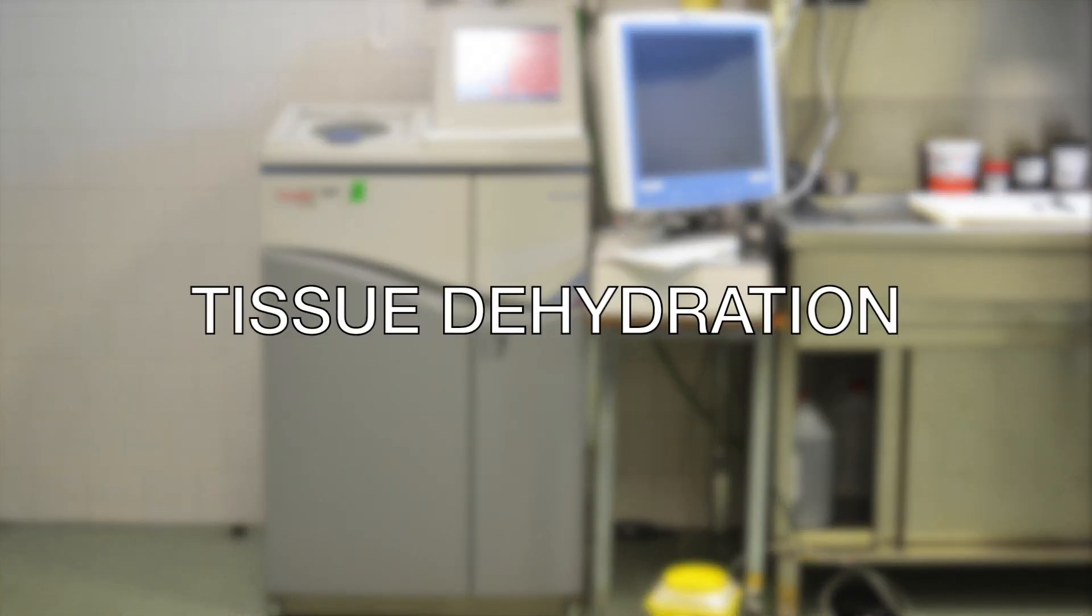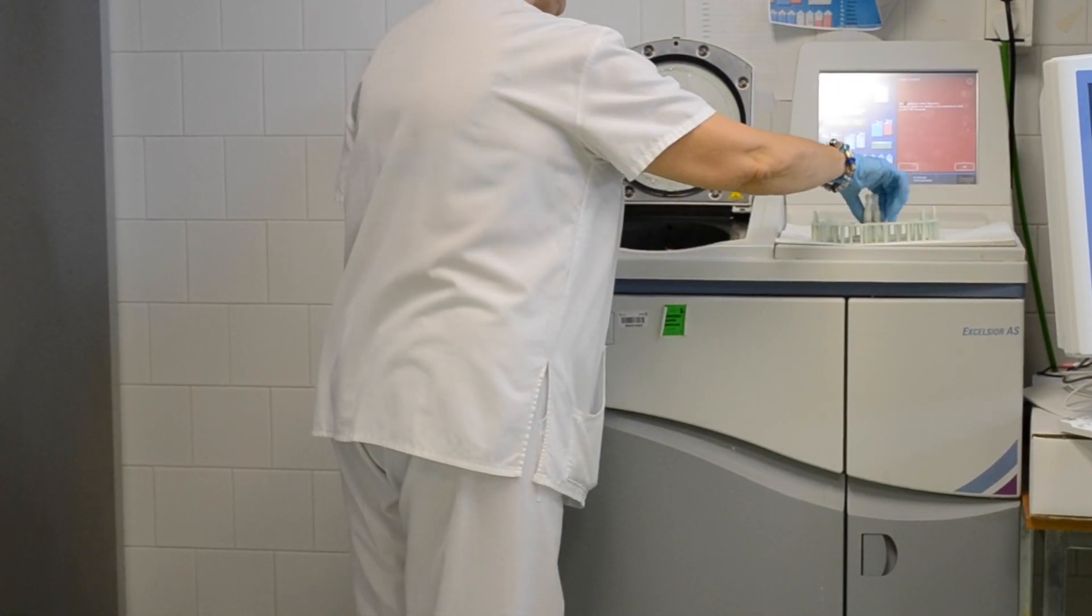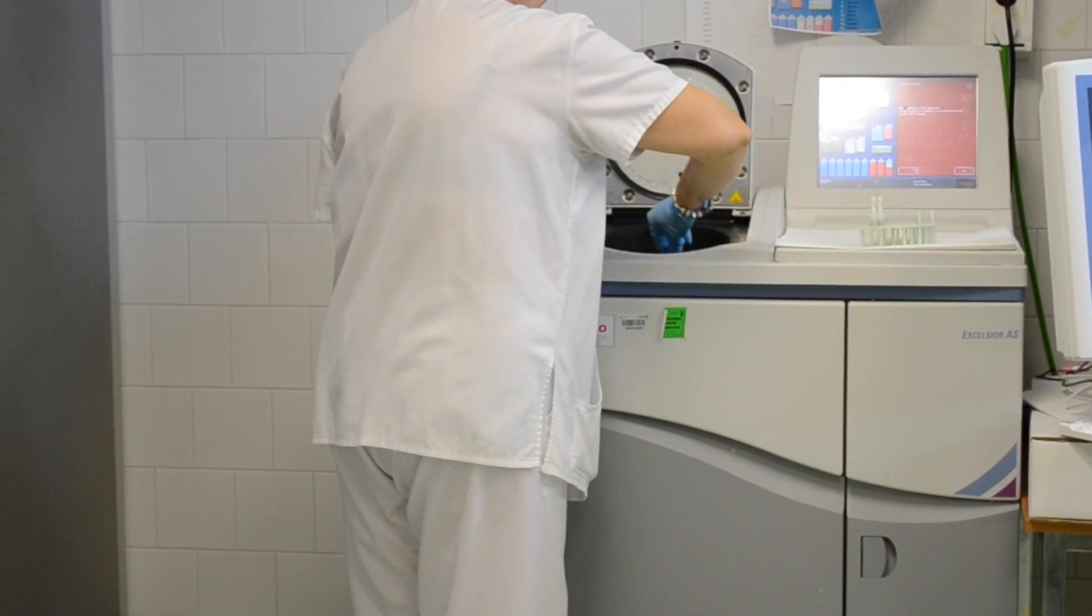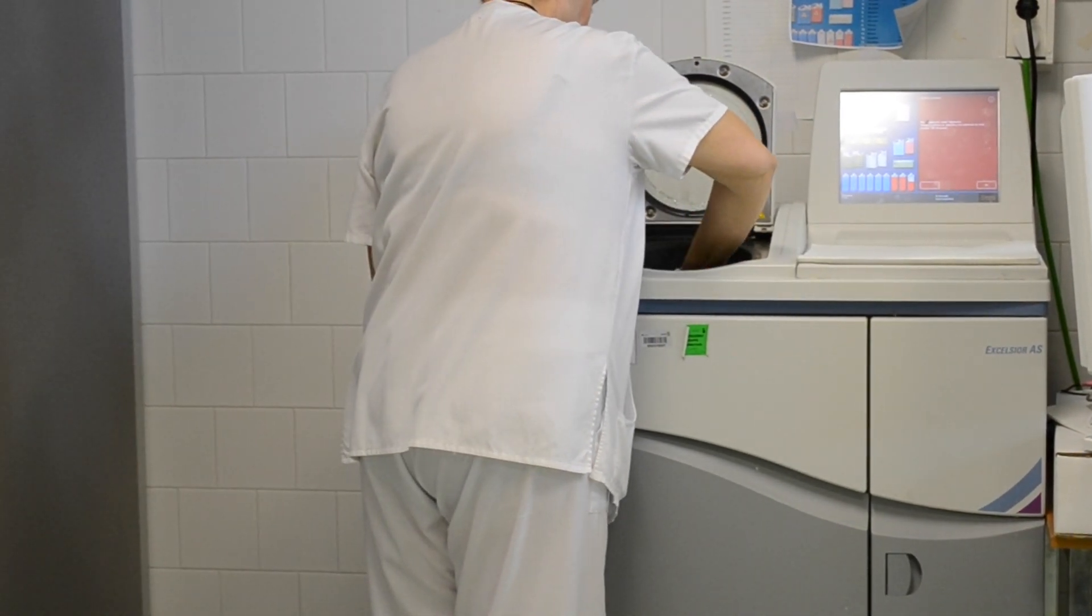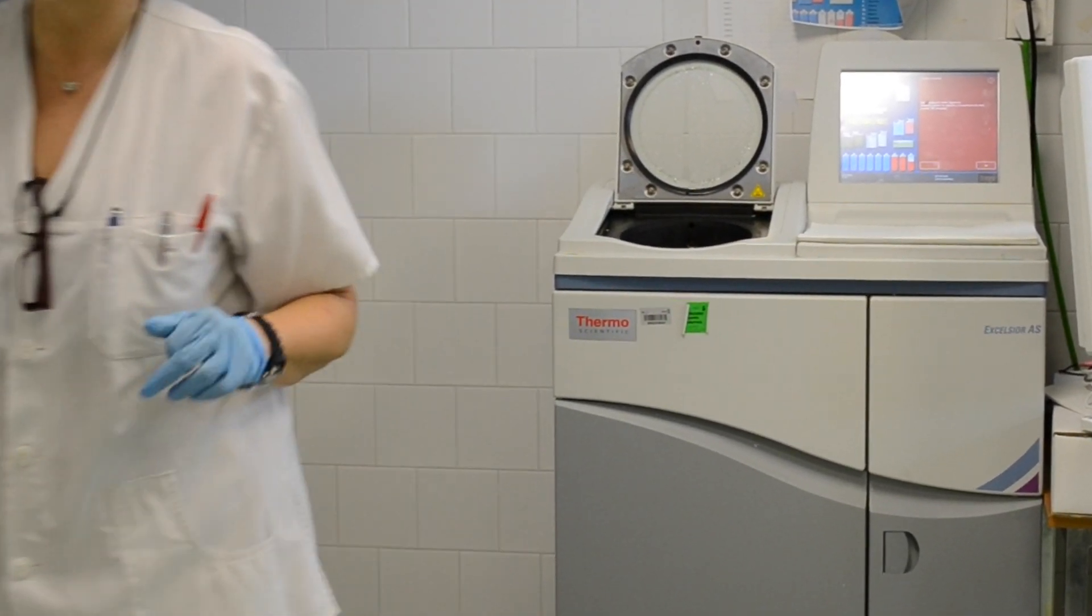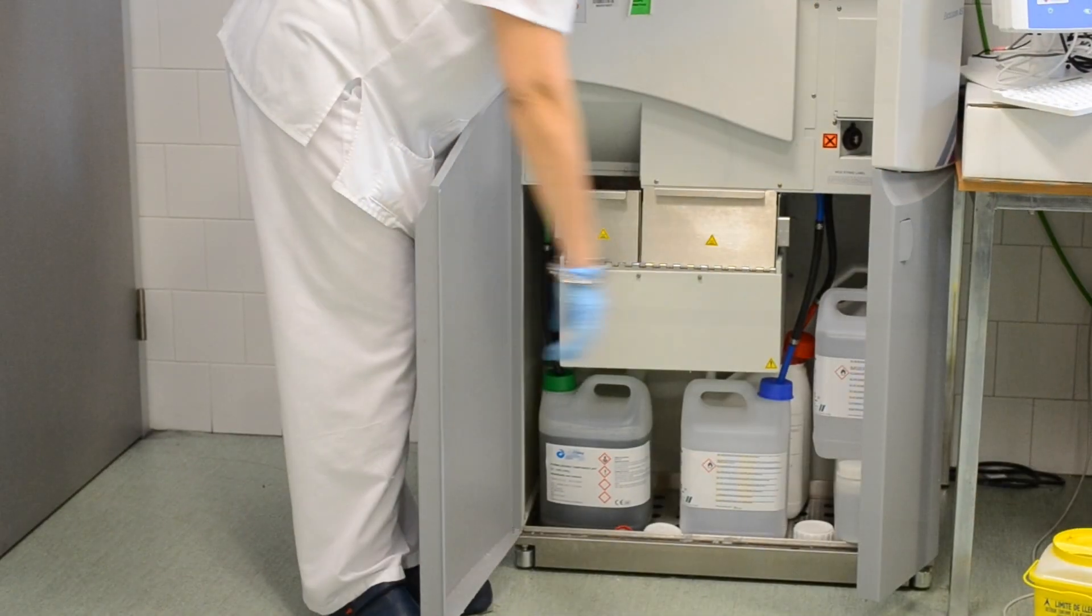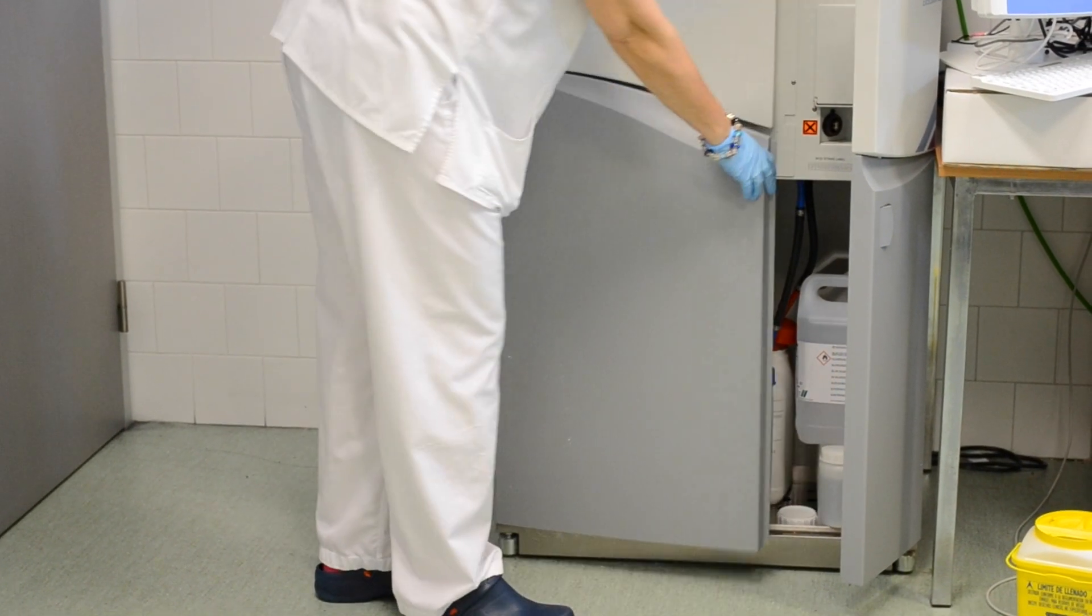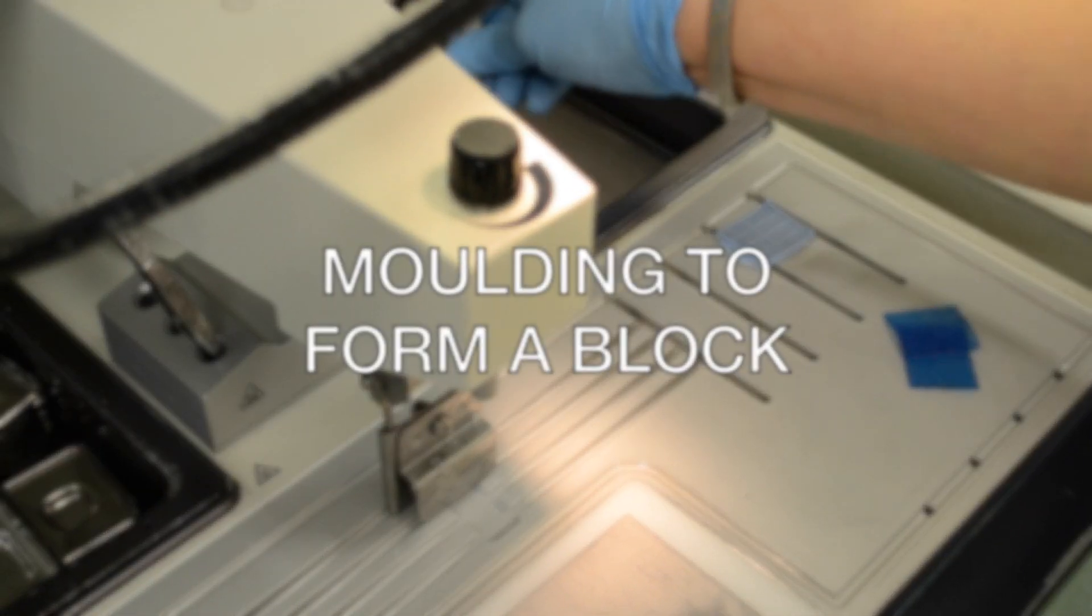To do this, we use a tissue processing machine. Once blocks have been prepared, they are included in this machine where the tissue is processed overnight through different alcohols of increasing gradation and xylene to dehydrate the tissue, that is, to remove the water and finally replace it with paraffin. All these components are located inside the machine and automatically the blocks pass through different phases. After 16 hours approximately, the tissue blocks are obtained.